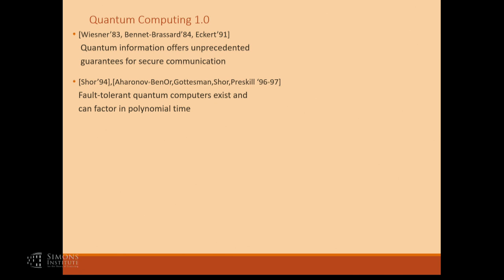The second major discovery is the realization that by building machines based on the principles of quantum mechanics, you could solve certain computational problems such as factoring much faster than we know how to do using classical computers only. And not only this, but this hypothetical quantum computing machine could in principle be built fault-tolerantly — there's a whole theory of error correction for quantum machines. But that was all in the 80s or 90s, and at the time all of these were highly theoretical results.